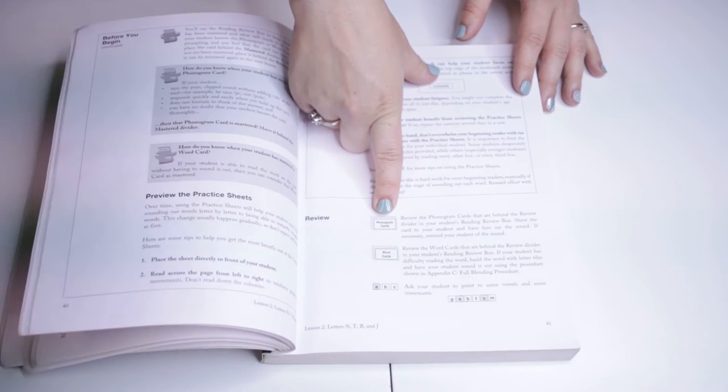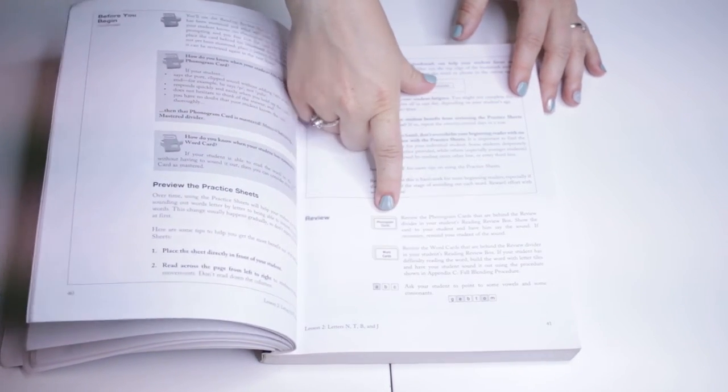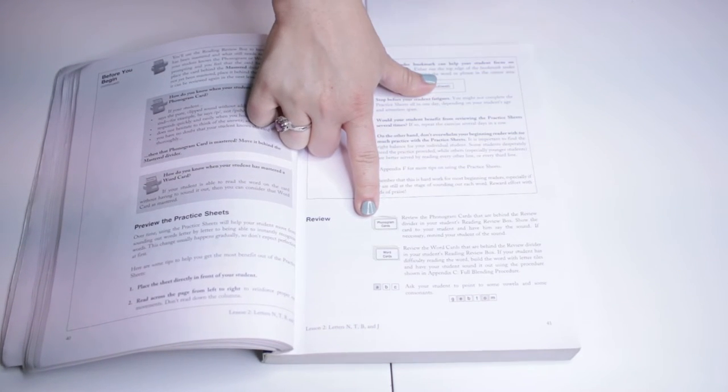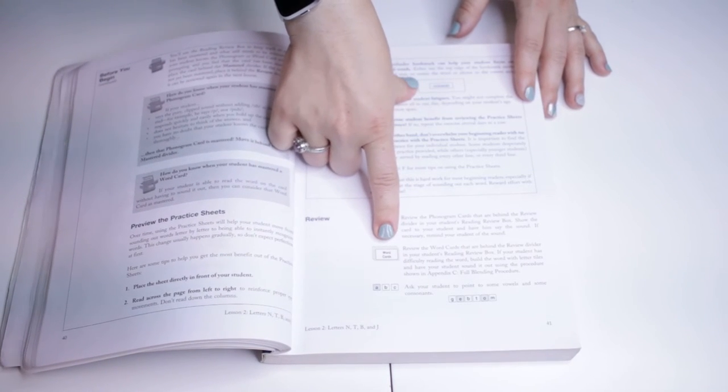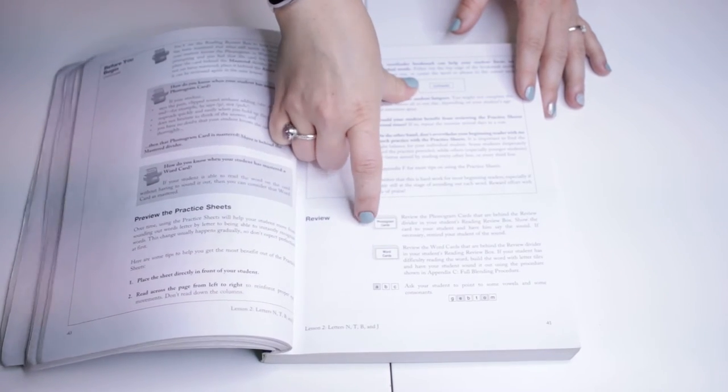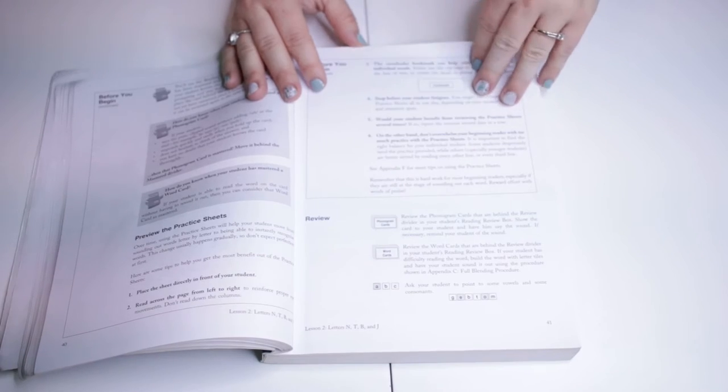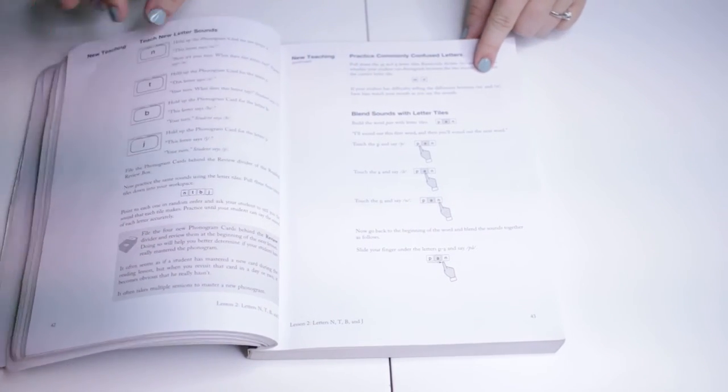And then down here we have the phonogram cards. There are word cards and phonogram cards. The phonogram cards are the cards with the letters on them, so we'll just simply say like A, B, C, D. And the word cards are the sight words they're going to work on. So it tells you what you'll need for both of those and you pull out exactly what you'll need. And that's considered review.